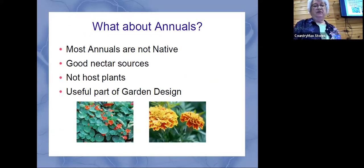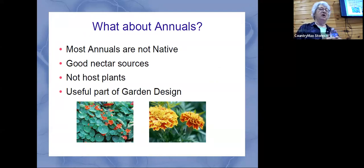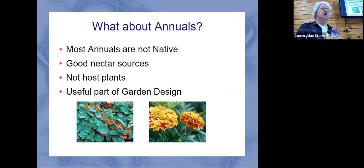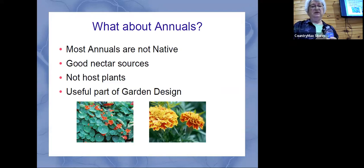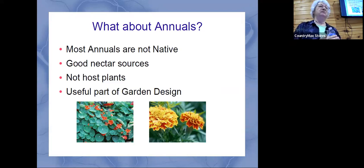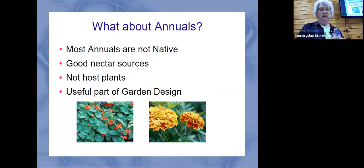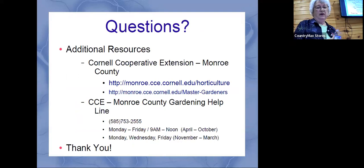Of course with annuals, we all need some color right away in the spring and can start putting some out. A lot of annuals and plants don't really like to get out there until the soil warms up to at least 65 or 70 degrees. So spring may be here soon.